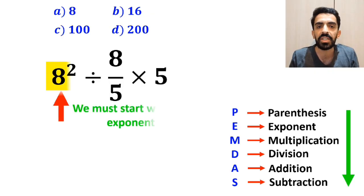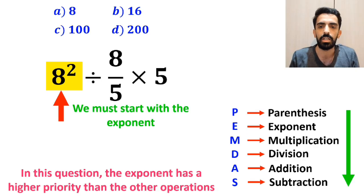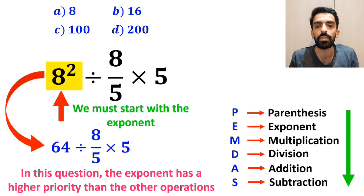Okay, first we start with the exponent, because in this question, exponent has a higher priority than the other operations. So, instead of this expression, we can write 64 divided by 8 over 5 multiplied by 5.